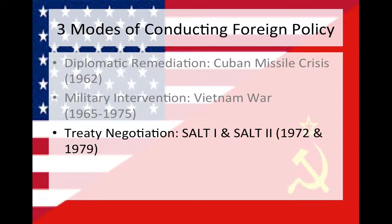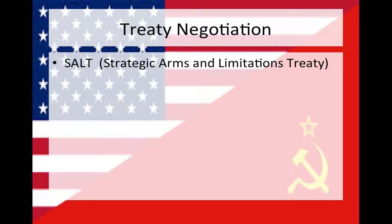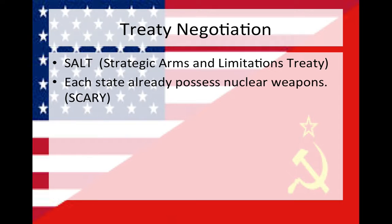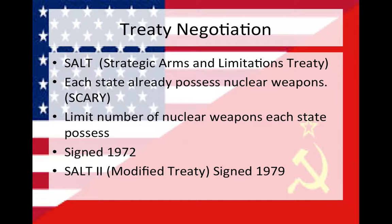So we looked at diplomatic remediation and military intervention. Now let's discuss the final element: treaty negotiations. During the Cold War in 1972, the United States and Soviet Union recognized that both states had a lot of nuclear weapons, which became quite frightening — at one point, they possessed enough nuclear power to destroy the world three or four times. Each state realized it might be beneficial to reduce their nuclear stockpile. The goal was to limit the number of nuclear weapons each state could possess, with a quota for each side. They met in 1972 and signed a treaty limitation. SALT II was also signed seven years later, further limiting that number. This was an example of treaty negotiation.